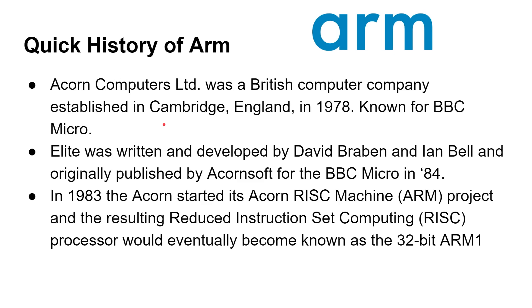Quickly turning to ARM now. Acorn Computers was a British computer company in Cambridge, established in 1978 — at the same time the 8086 was coming out. In the UK it was very important because it was responsible for the BBC Micro, which was very big in education. And Elite was originally developed by David Braben and Ian Bell and published by Acorn Soft for the BBC Micro in 1984. In 1983, Acorn started its Acorn RISC Machine project, which resulted in a RISC processor that would eventually become the 32-bit ARM1.